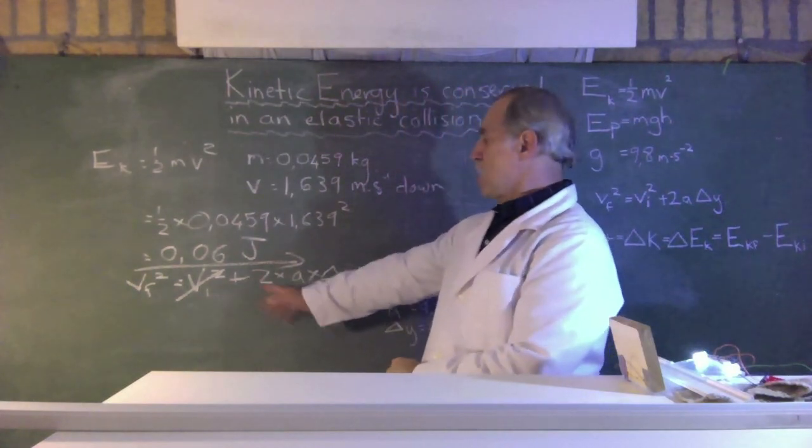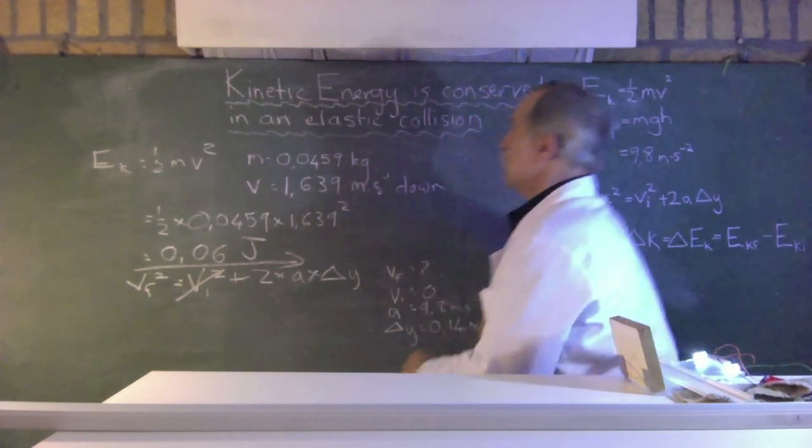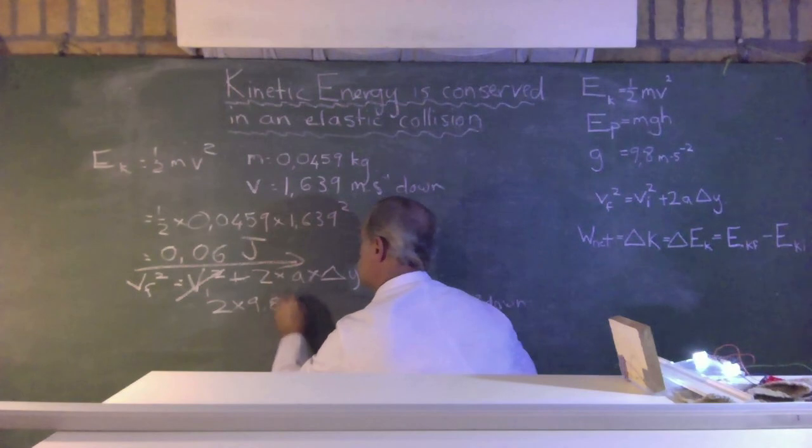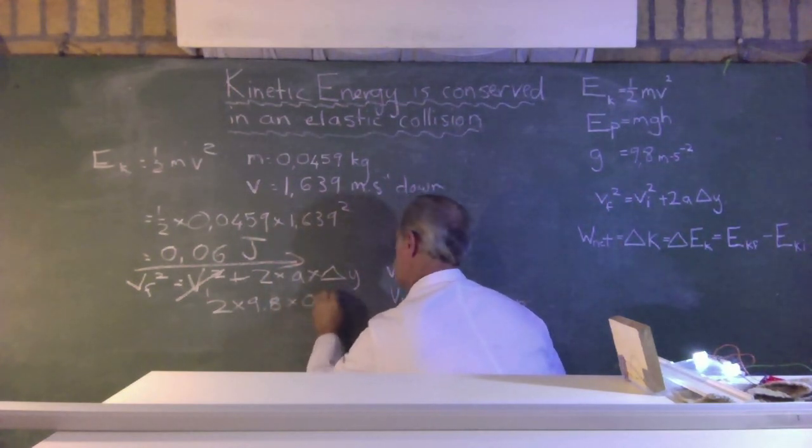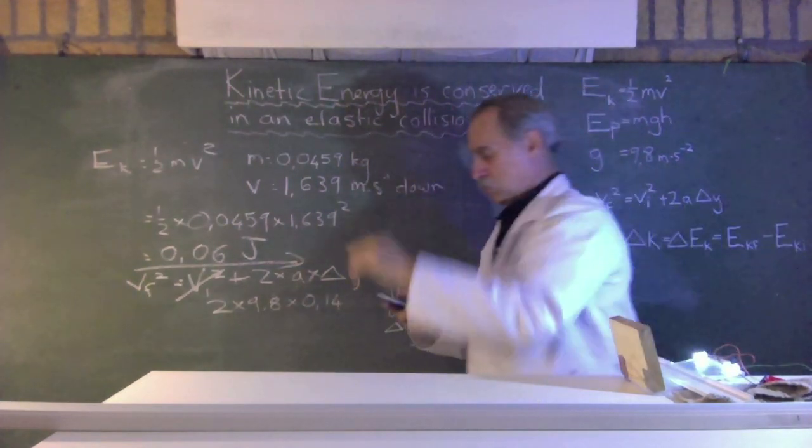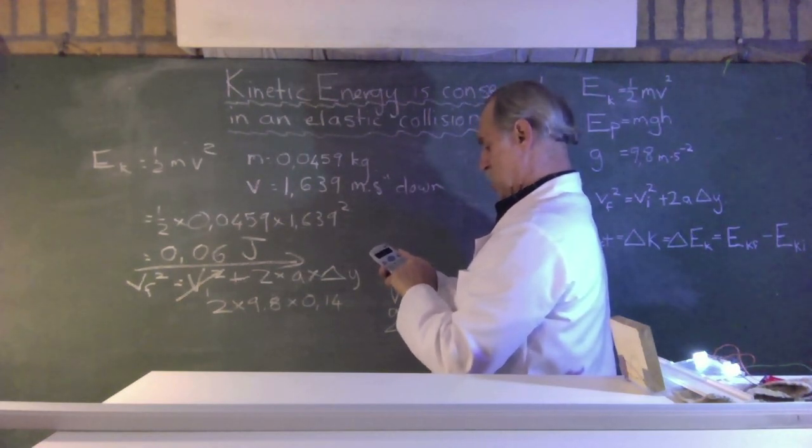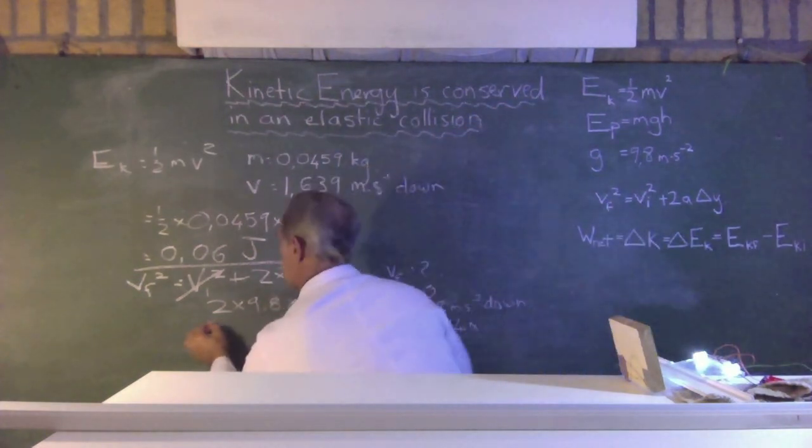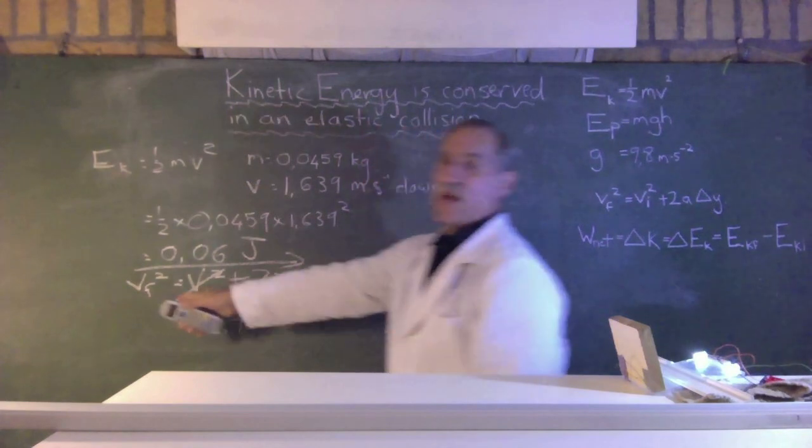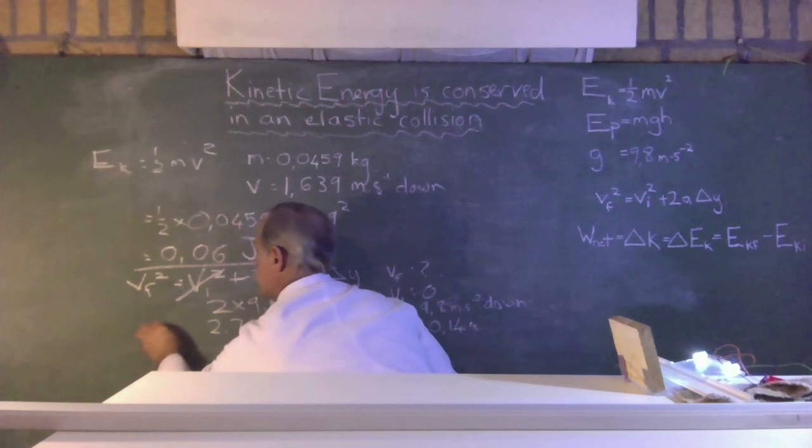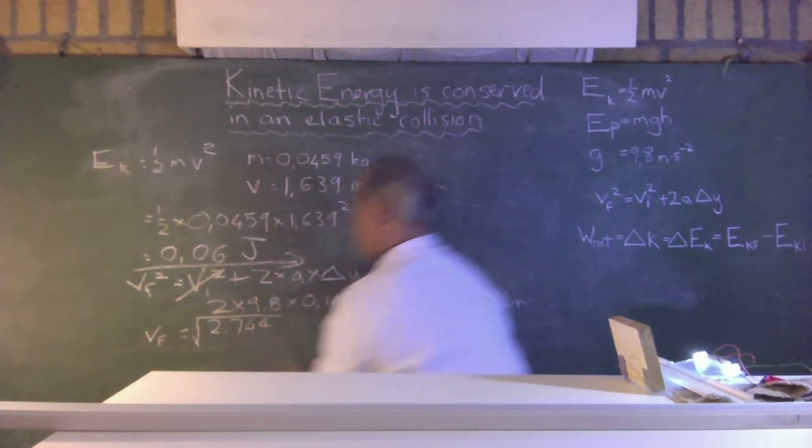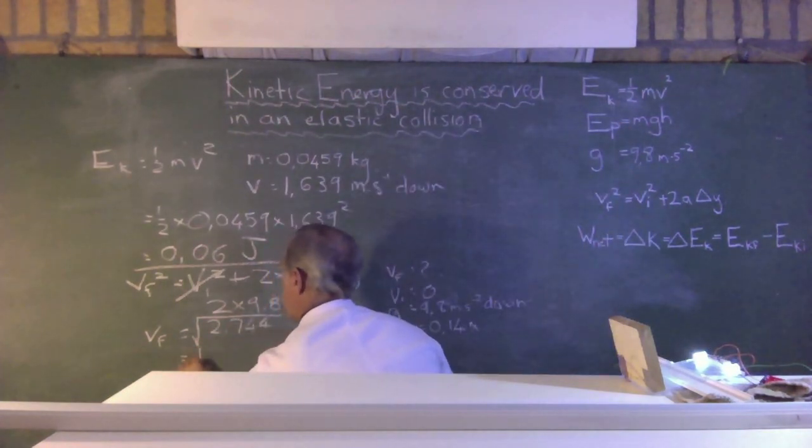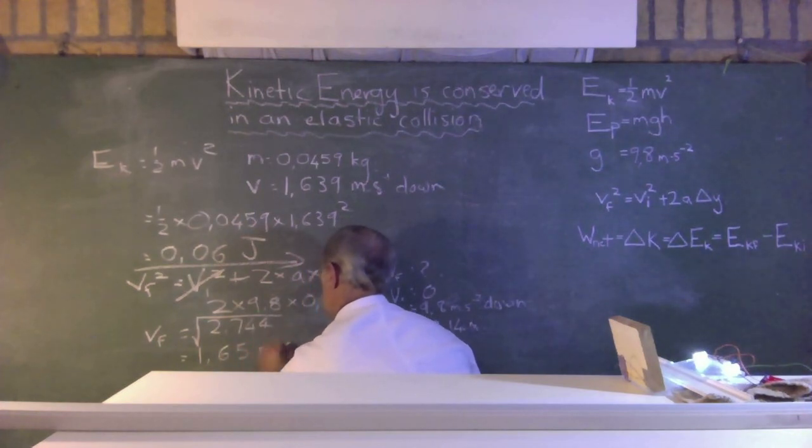So, let's plug it into our equation of motion and see if we get the same as 1.639 meters per second. So, it's equal to 2 times 9.8 times delta y, which was 0.14. So, 2 times 9.8 times 0.14 equals 2.744. But that is equal to final velocity squared, so V final must be equal to the square root of that. Finding the square root, and it says 1.65 meters per second, and that would be down.